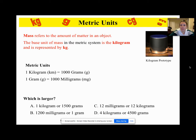Okay, next one. Mass refers to the amount of matter in an object. The base unit of mass is the kilogram and is represented by a lowercase kg. So one kilogram is equal to 1000 grams, one gram is equal to 1000 milligrams, again just using the conversion chart.